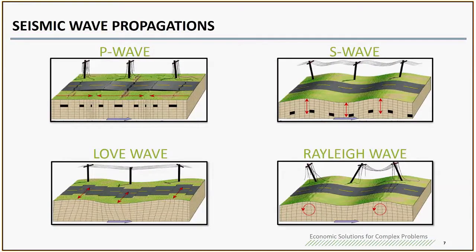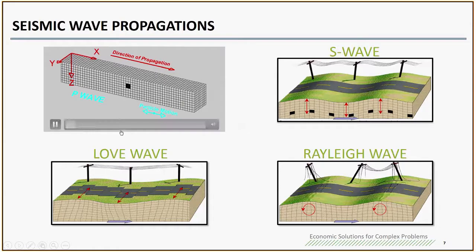For seismic wave propagations, there are four different types. Two of them are body waves: P wave and S wave. P waves, or primary waves, are compressional and dilatational waves. They induce volumetric deformation and the direction of wave propagation is parallel to the particle movement. You can see this is the direction of wave propagation and the particle movement is parallel to the wave propagation.